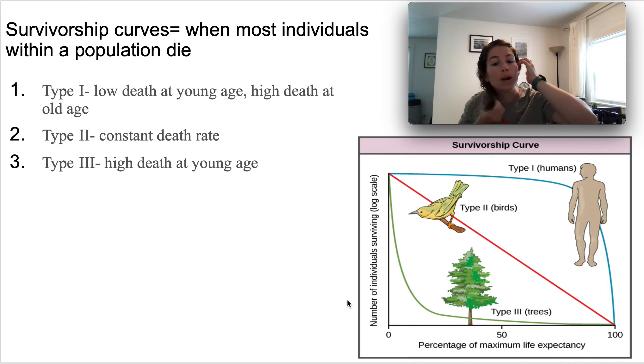Type II is a constant death rate. So what you see is individuals that have the same chance of dying early in life, middle of life, end of life. The chance of them dying is the same. It's consistent throughout their life.